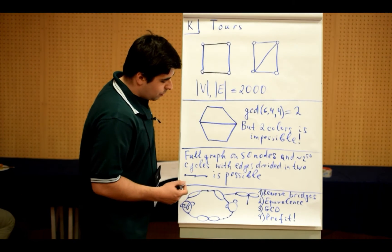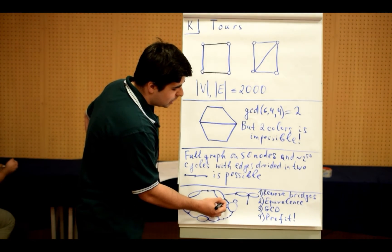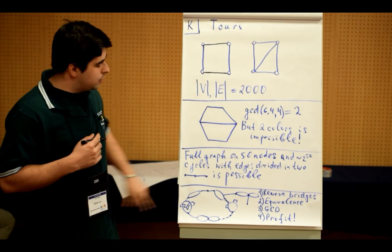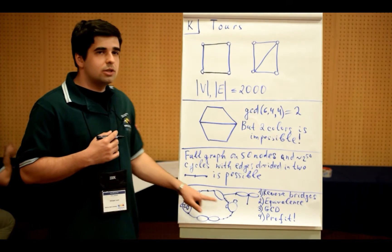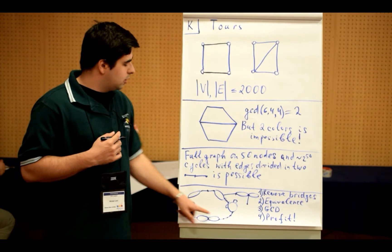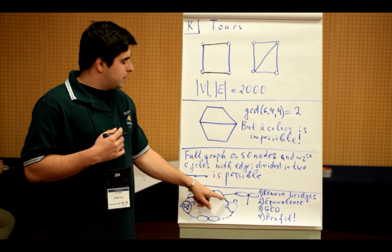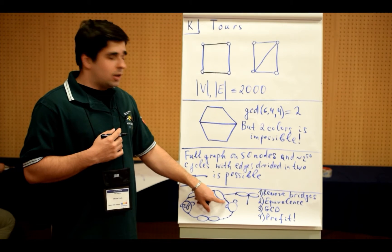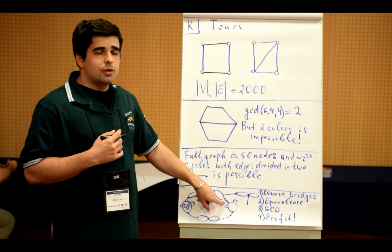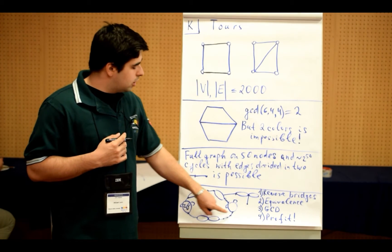We just remove some of the edges. For example, we remove this edge and then we find bridges, all the bridges in the remaining doubly connected component. So it was doubly connected, but after removing this bridge, it is already not doubly connected. And then there are some bridges.